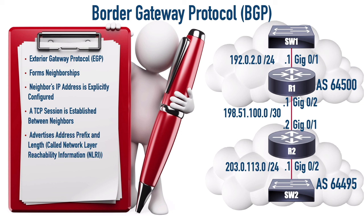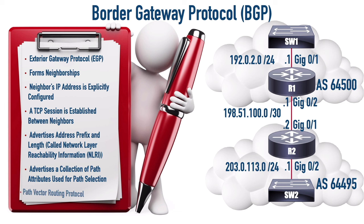In one of those BGP update messages, we send more than just the NLRI. We also send any routes we want to withdraw from our table, and we send path attributes. BGP uses path attributes to determine which path to select when it has more than one way to get to a particular destination network. While OSPF is a link state routing protocol, RIP is distance vector, and EIGRP is advanced distance vector, BGP is kind of in its own category - it's a path vector routing protocol.